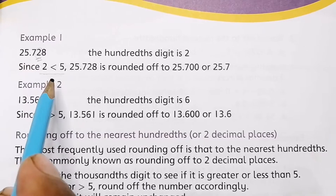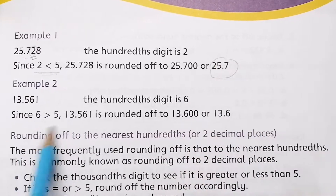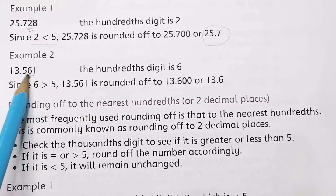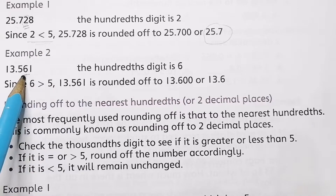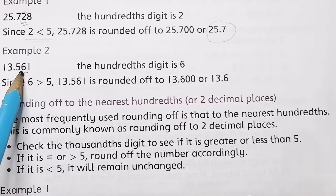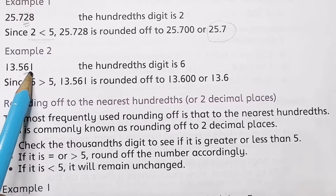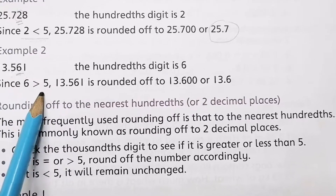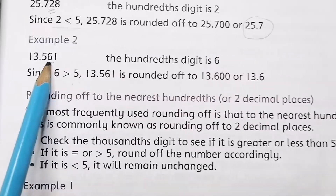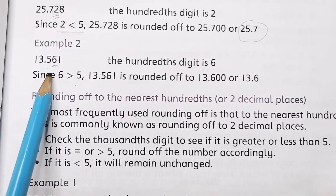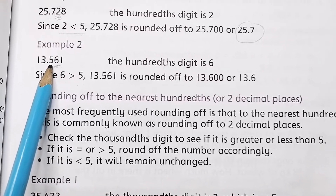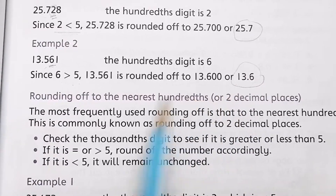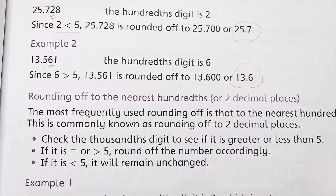Second example: 13.567 is given. You check the hundredth place — 6 is at the hundredth place, 5 is at the tenth place, and 7 is at the thousandth place. Since 6 is greater than 5, you change the number. The 5 in the tenth place is rounded up to 6, so you write 13.6.